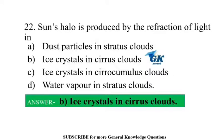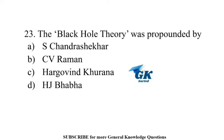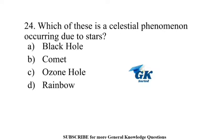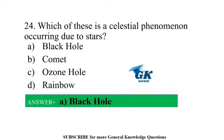The colors of the star indicate its temperature. Place produced by the refraction of light in ice crystals and cirrus clouds. The black hole theory was propounded by S. Chandrasekhar. Which of these is a celestial phenomenon occurring due to stars? Black hole.